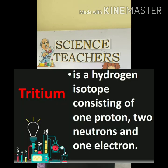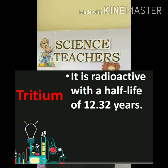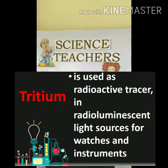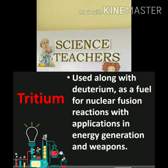Third, we have tritium. Tritium is a hydrogen isotope consisting of one proton, two neutrons, and one electron. It is radioactive with a half-life of 12.32 years. It is used as a radioactive tracer in radioluminescent light sources for watches and instruments, and along with deuterium as a fuel for nuclear fusion reactions, with applications in energy generation and weapons.